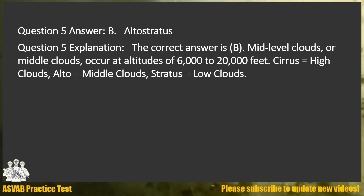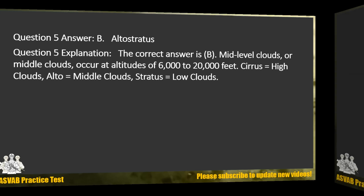Answer: B. Altostratus. Explanation: The correct answer is B. Mid-level clouds, or middle clouds, occur at altitudes of 6,000 to 20,000 feet. Cirrus equals high clouds, alto equals middle clouds, stratus equals low clouds.